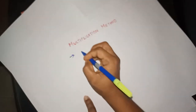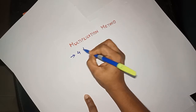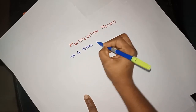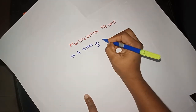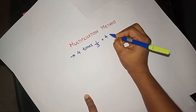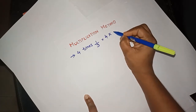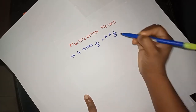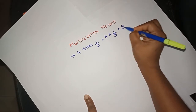How do we write it? We write it as 4 times 1/3. We write it: 4 times 1/3 equals 4/3.